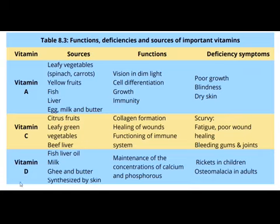Now let's look at vitamin D. Sources of vitamin D include fish, which is very preferable. Also liver and natural oils — we should use natural oils rather than synthesized artificial ones. Other sources include milk, ghee, and butter, which are milk products. These all contain vitamin D.